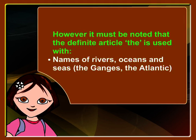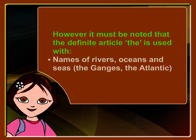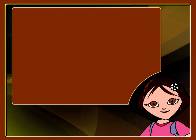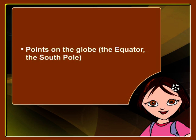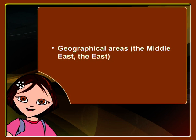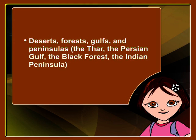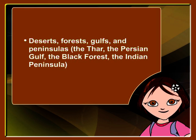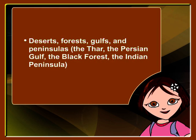The definite article is always used in the following cases: names of rivers, oceans and seas — the Ganges, the Atlantic; points on the globe — the equator, the South Pole; geographical areas — the Middle East, the East; deserts, forests, gulfs and peninsulas — the Thar Desert, the Persian Gulf, the Black Forest, the Indian Peninsula.